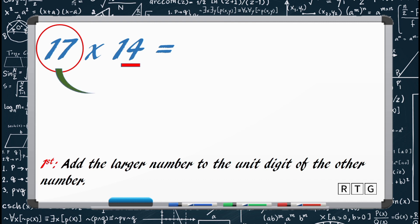What we only have to do is to add these two. So, 17 plus 4 equals 21.